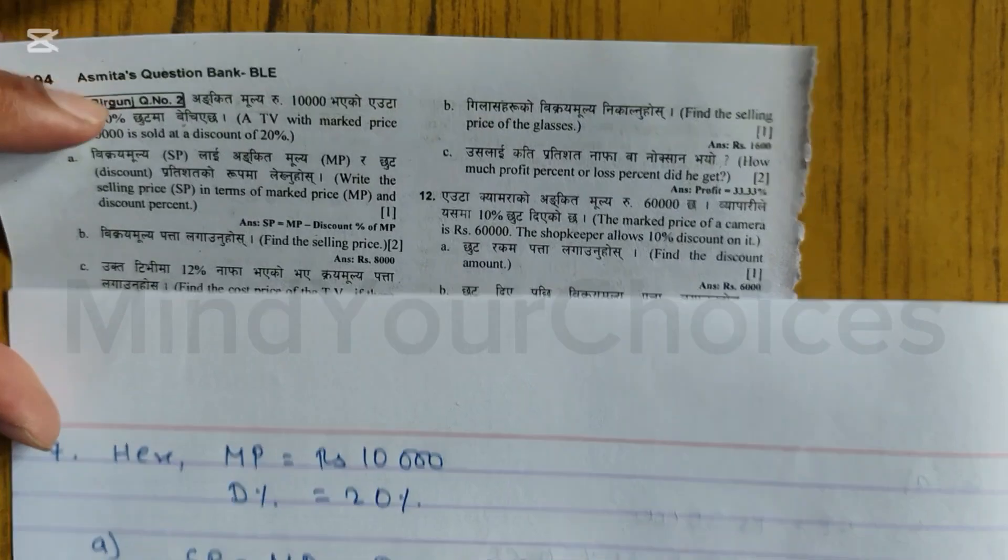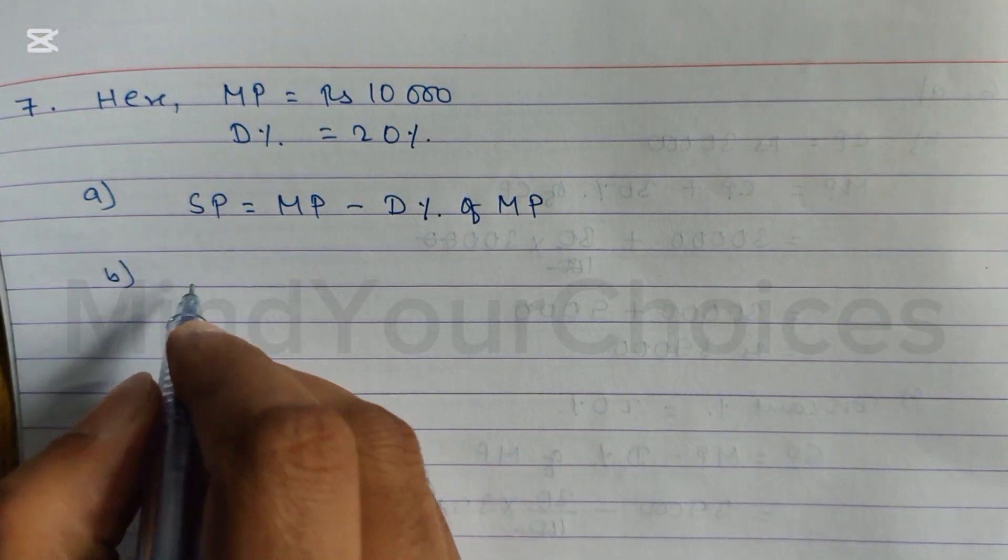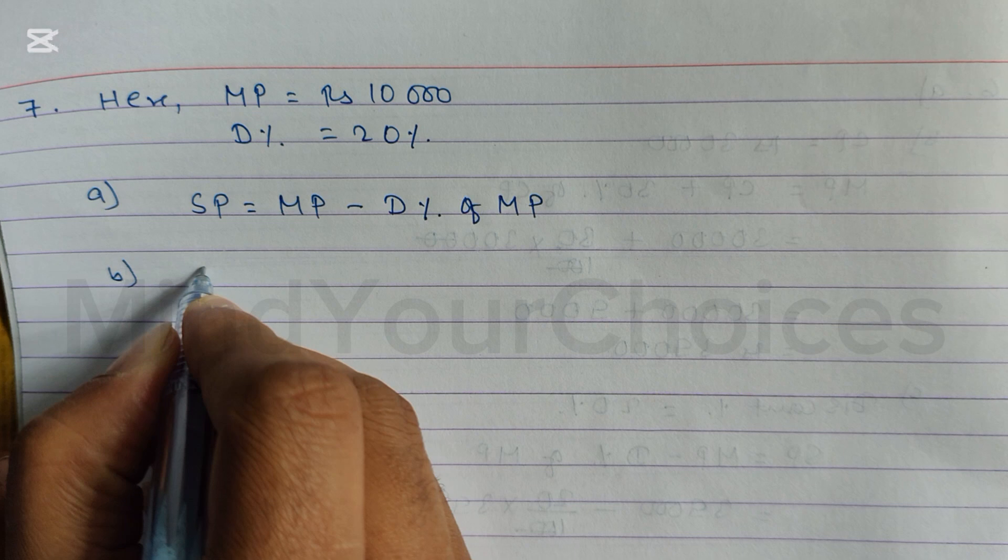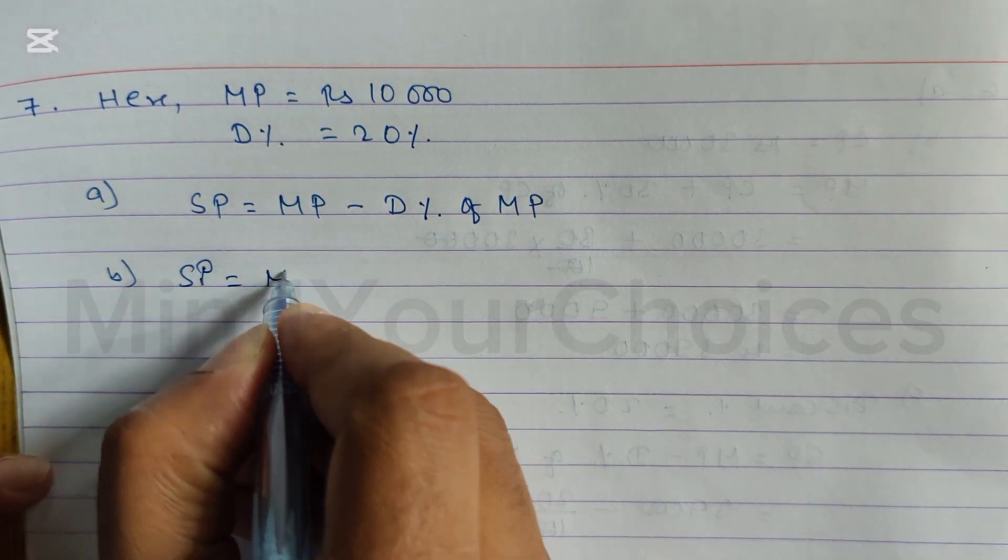Number B asks: find the selling price. Here we have to find out the selling price. So we need to calculate SP. We have to use the selling price formula: SP equals MP minus discount percent of MP.